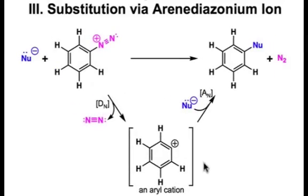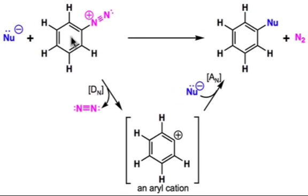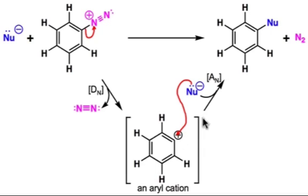Now let's take a look at the third substitution pathway, which goes by the aryl diazonium ion intermediate. The overall substitution is a two-step process that begins by nucleophile dissociation — the loss of neutral nitrogen to form this aryl cation. Notice this carbon is unsubstituted; it's an sp-hybridized carbocation in an aryl ring. The next step is capture of this carbocation with the incoming nucleophile in a nucleophile association step to make the new carbon-to-nucleophile bond.